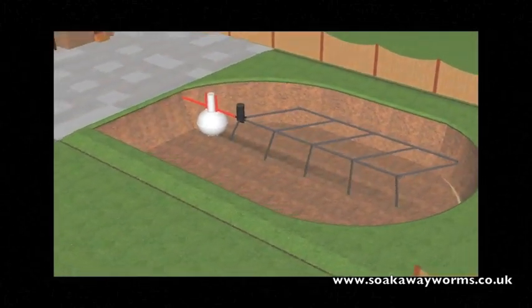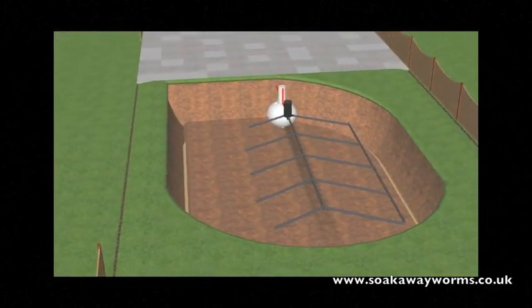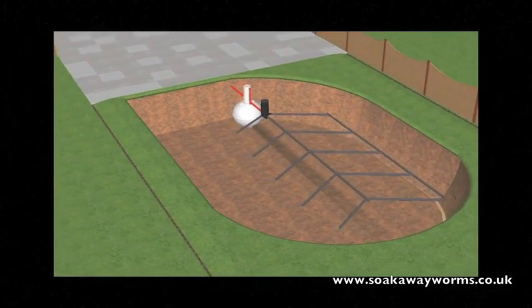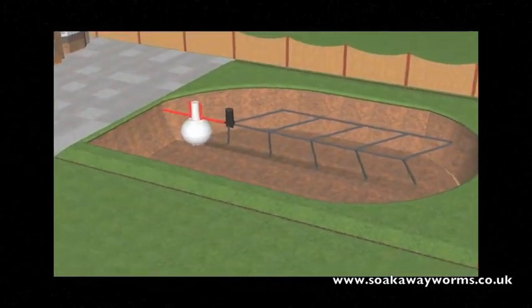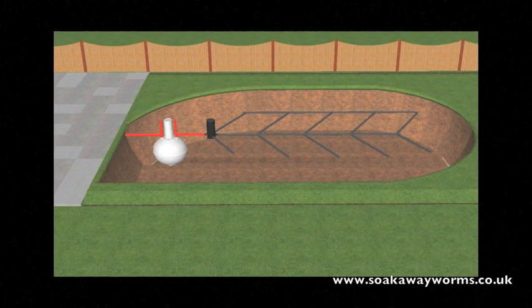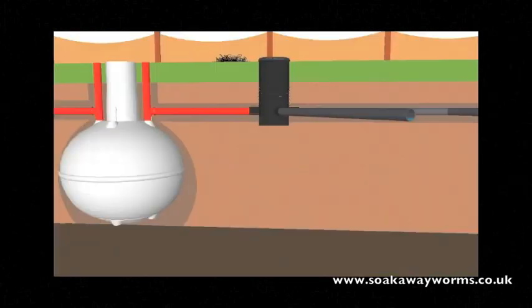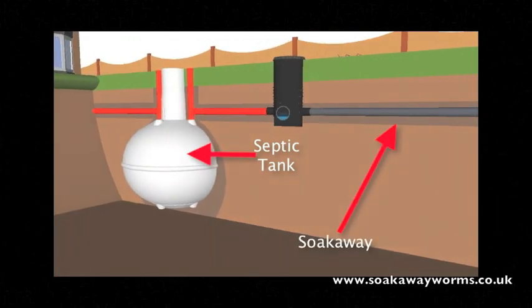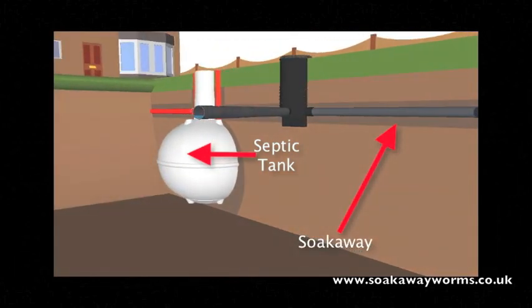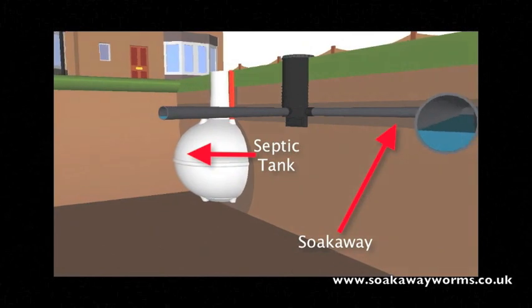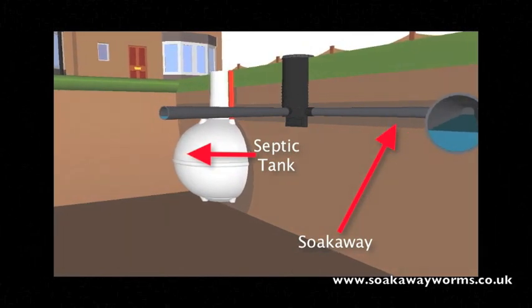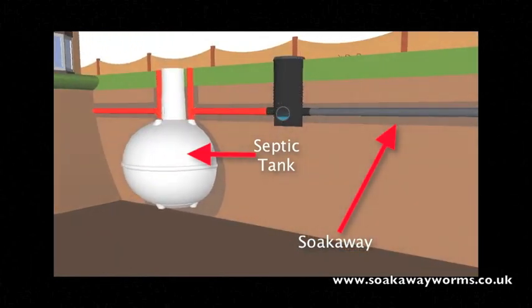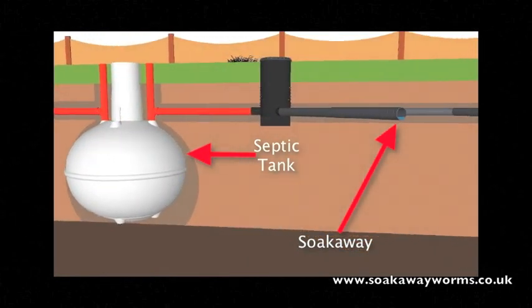Every septic tank needs a soakaway. Soakaways can be created in many different shapes and designs. In this instance we've chosen the herringbone or fishbone design which is very popular because it allows water to permeate naturally into the soil over a wide area. There are various materials used for soakaways, and in this video we've used the perforated pipe design because it's very popular and works well underground.